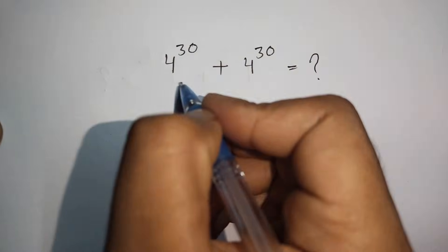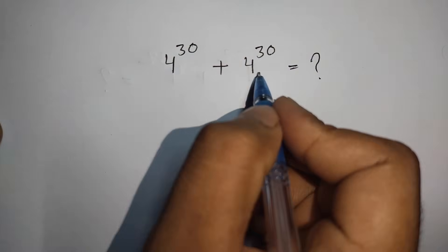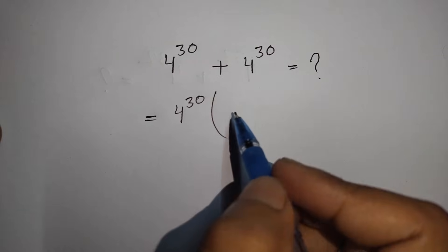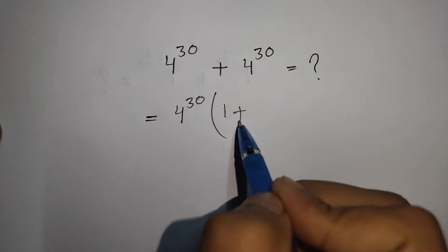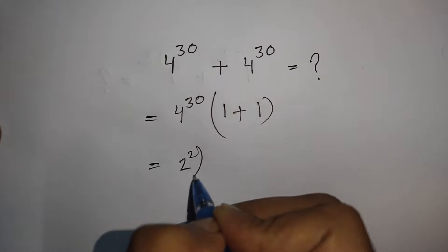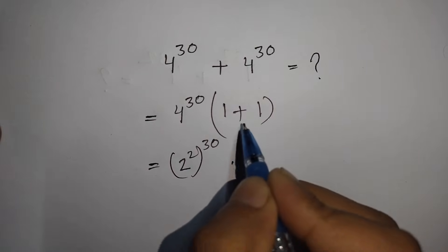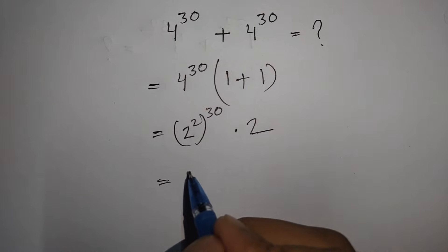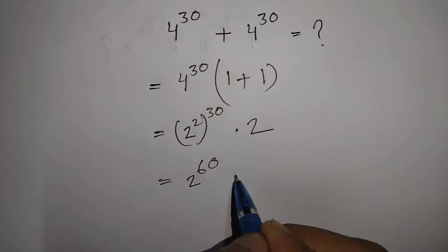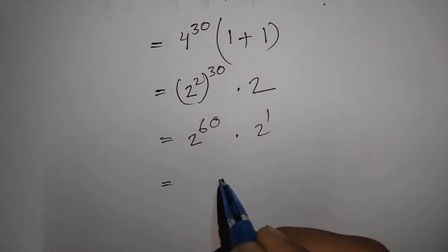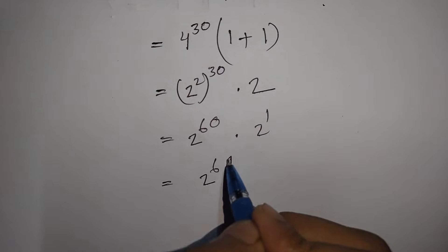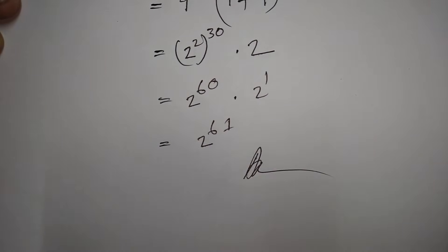Now, how to solve 4³⁰ + 4³⁰. We take 4³⁰ as a common factor: 4³⁰(1 + 1) = 4³⁰ × 2. Now 4³⁰ = (2²)³⁰ = 2⁶⁰, and 2 = 2¹. Since the base is the same: 2⁶⁰ × 2¹ = 2⁶⁰⁺¹ = 2⁶¹. So 2⁶¹ is the correct answer.